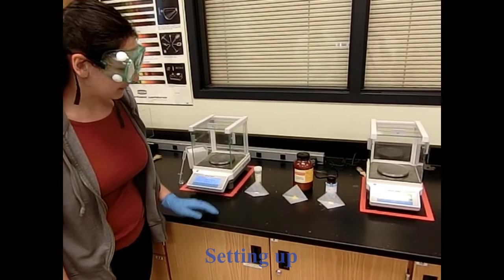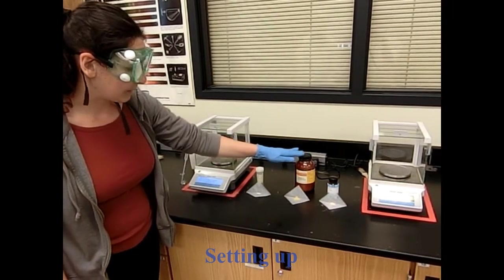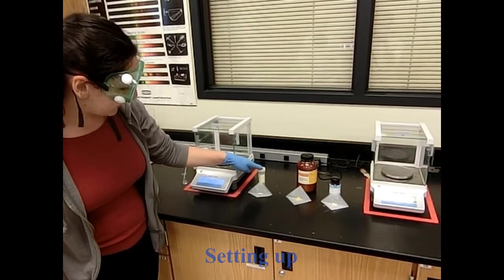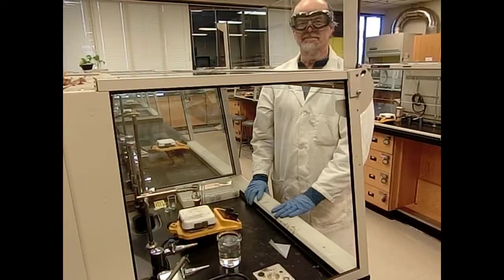Here we've prepared by weighing out 0.1 millimole each of 3-hydroxy-2-naphthoic acid and of our sulfonic acid. And I also have 80 milligrams, in excess, of our sodium nitrite.